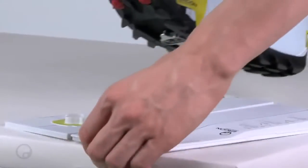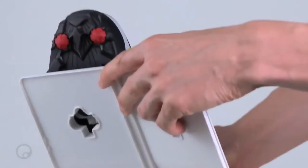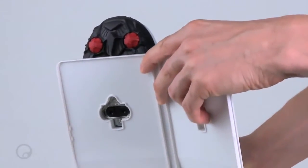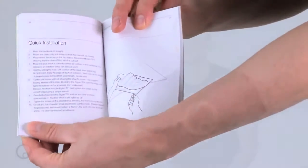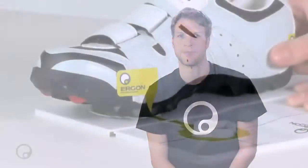Now fit the shoe and the cleat into the Ergon TP1. Reference the handbook to identify your first neutral position, or what I call position 0. Move the shoe into the position as set out by the handbook.